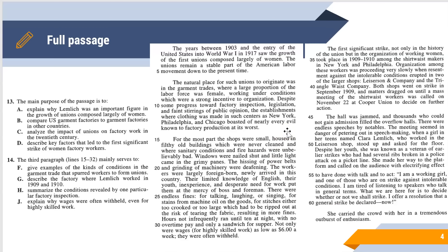Number 14 says the third paragraph, lines 15 through 32, mainly serves to, and the answer is F: Give examples of the kinds of conditions in the garment trade that spurred workers to form unions. Really bad things are happening here, such as fire hazards, fines, being taken advantage of by bosses and foremen, and workers, especially women, are understandably fed up with it and inspired to fight for better working conditions, which happens in the second part of the reading.